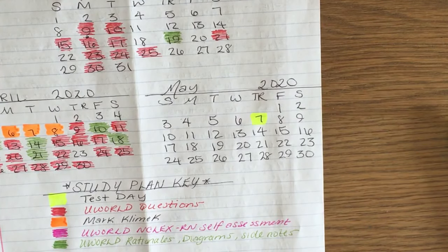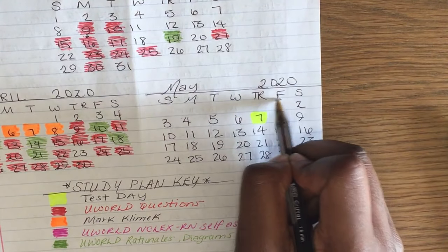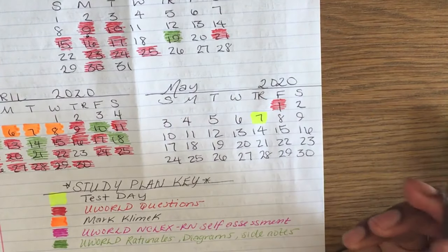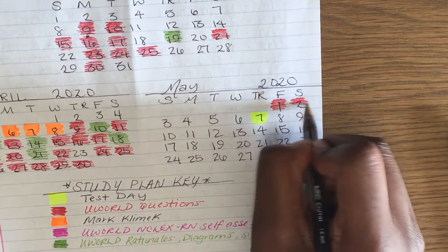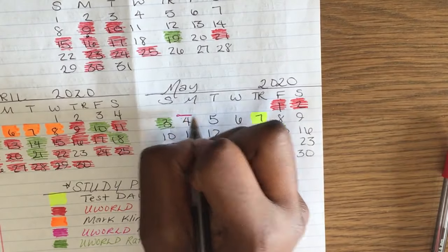On the first weekend of May, I decided that I wanted to do my self-assessment on Uworld. On the fourth, which was three days before my NCLEX test date on the seventh. And I marked that on my study plan as pink.